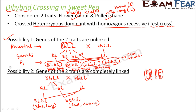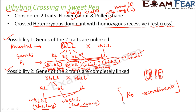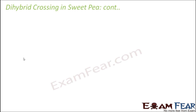Comparing the two possibilities: in possibility 1 (unlinked), the parental types appear in 50% of cases and recombinants in the other 50%. In possibility 2 (completely linked), 100% of offspring are parental types and there are no recombinations. These were just our assumptions — now let us look at what actually happened when the cross was performed in reality.